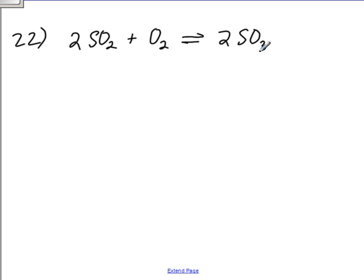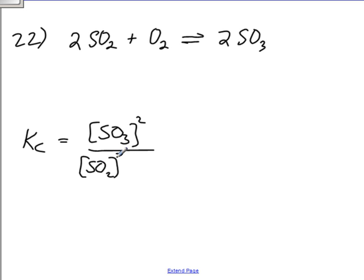The Kc expression for this, leaving some space because I'm going to do an ice table. The Kc expression is going to be the concentration of SO3 squared divided by the SO2 concentration squared and the O2 concentration.